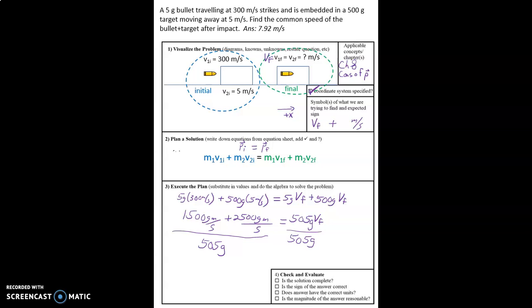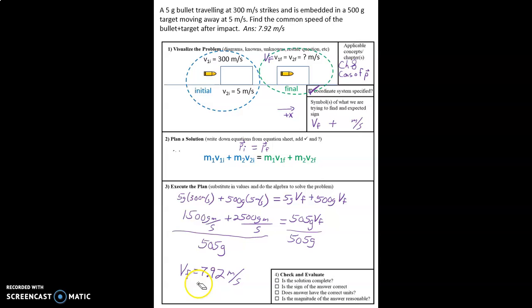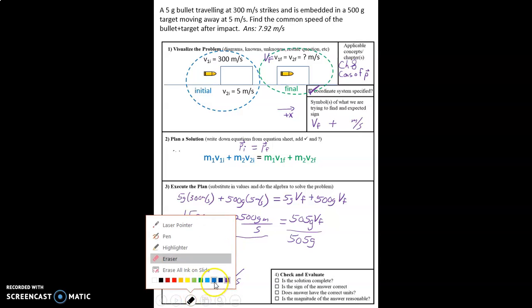So vf equals 7.92 and let's look at the units. Remember I said we did not have to convert, so we have gram meters per second in the numerator and grams in the denominator, so that ends up with an answer of meters per second. We did not need to convert everything into kilograms, both of the masses can just stay right as they are in grams and it works out just fine in the end.